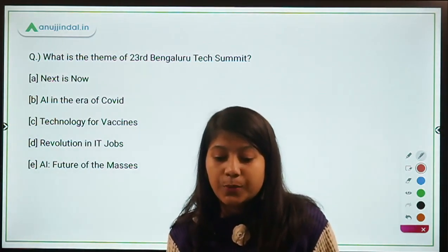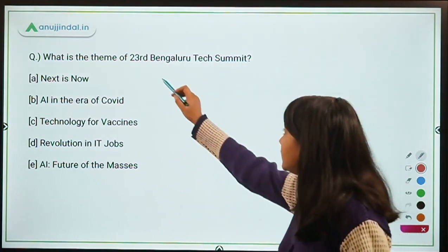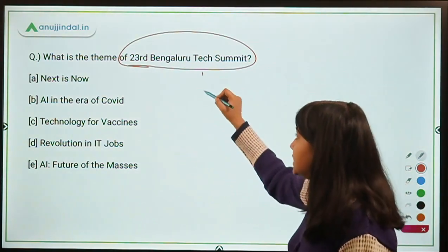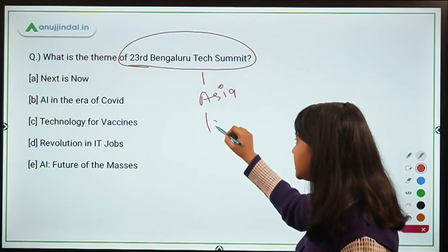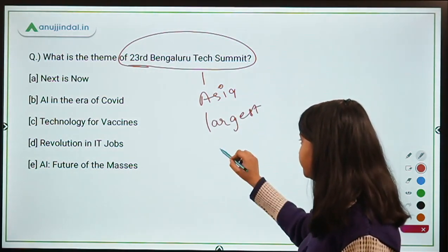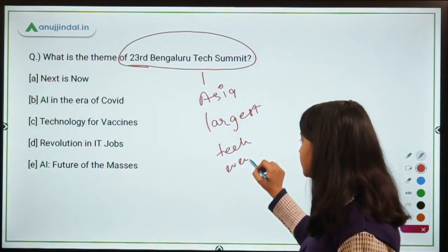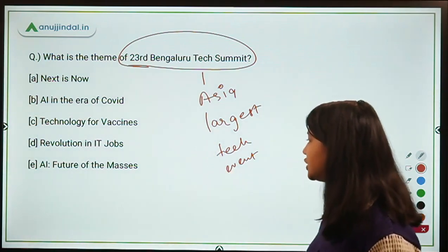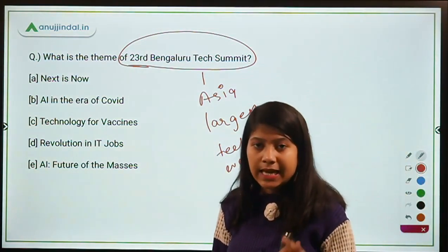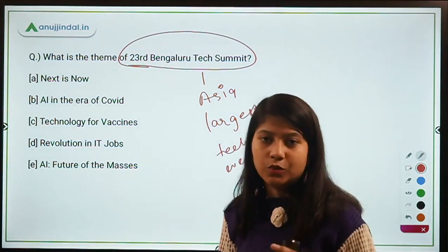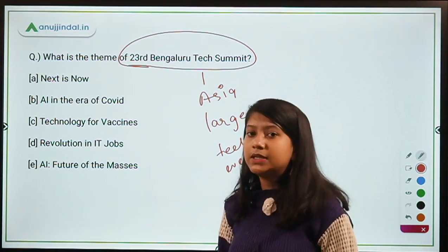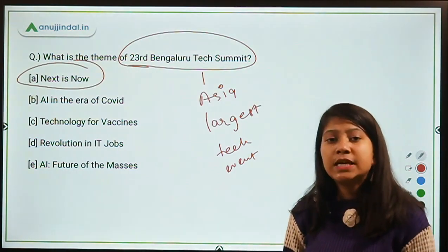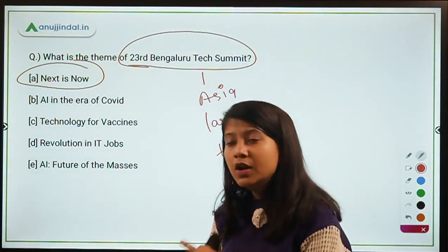What is the theme of the 23rd Bangalore Tech Summit? This summit is claimed to be Asia's largest technology event. It was recently held and addressed by Prime Minister Narendra Modi. The theme of the 23rd edition of the Bangalore Tech Summit is 'Next is Now'. Remember these facts.